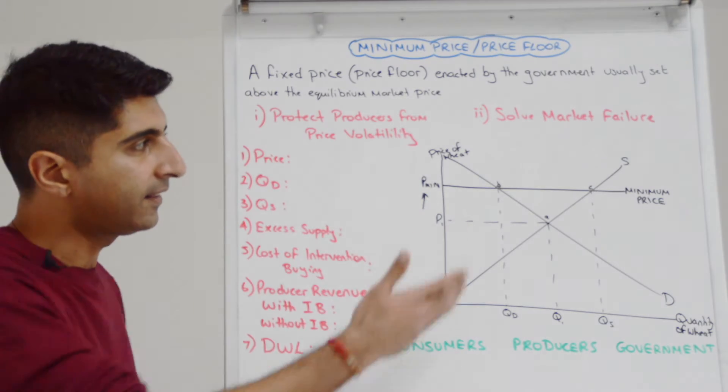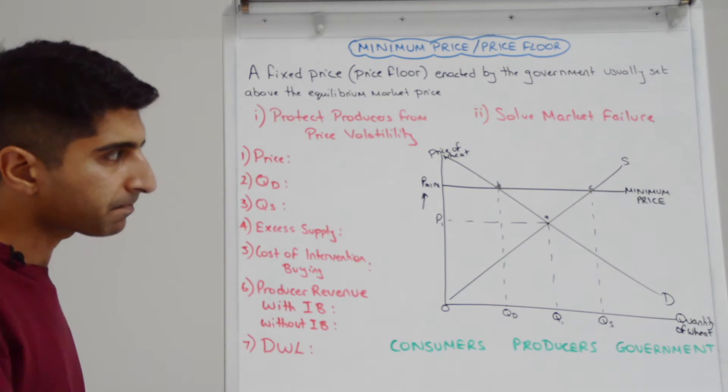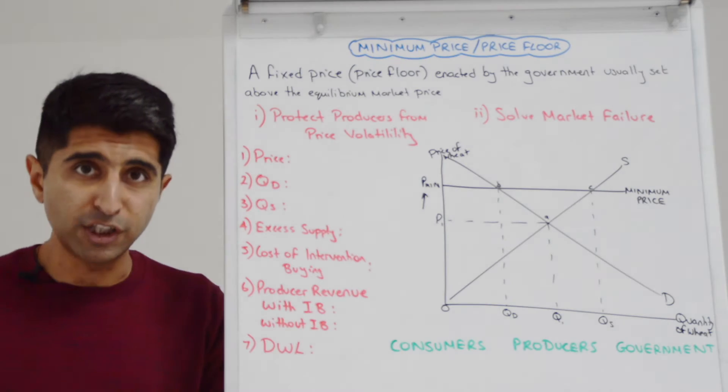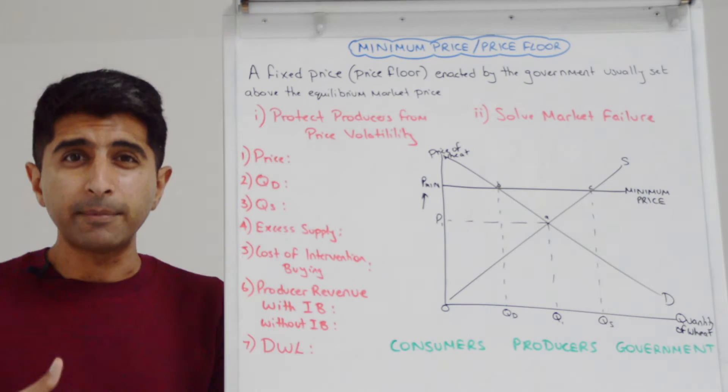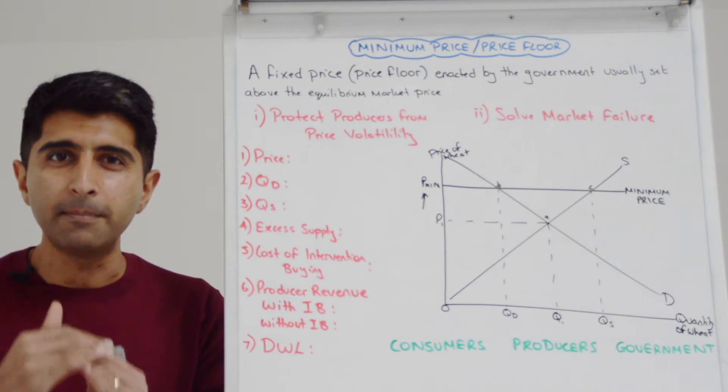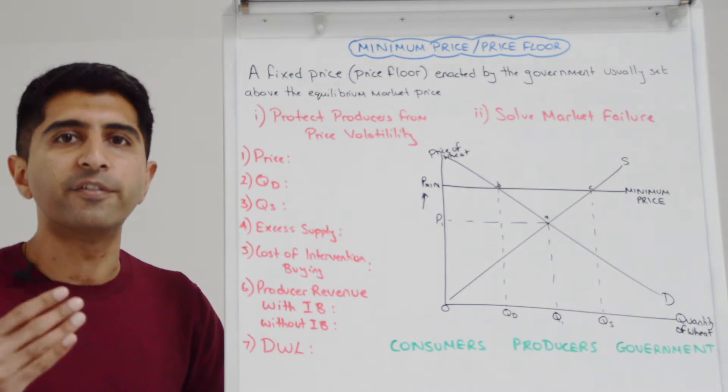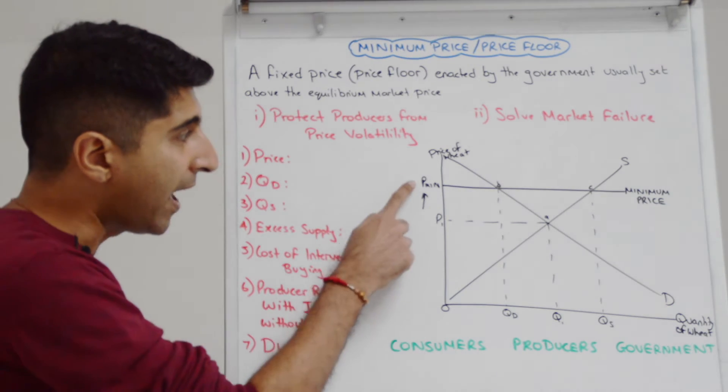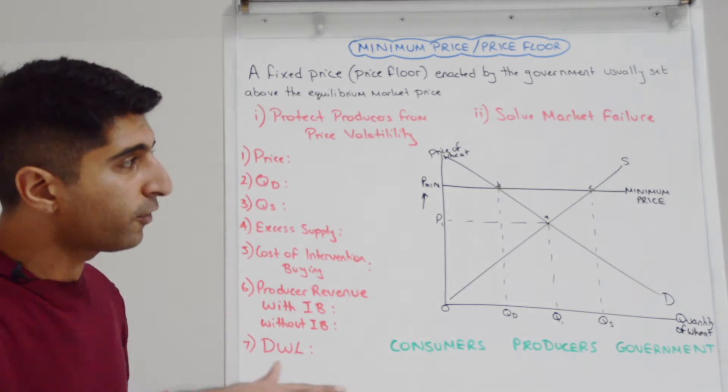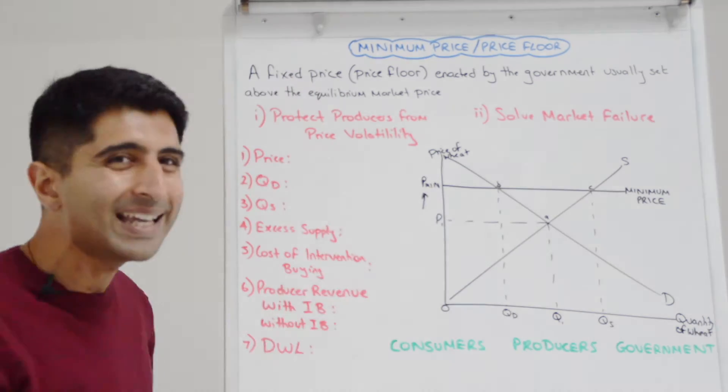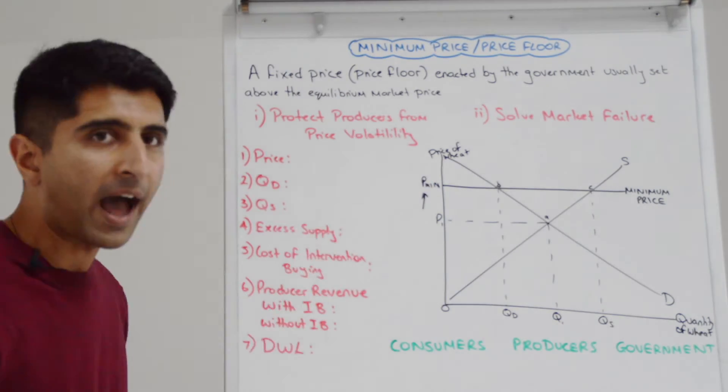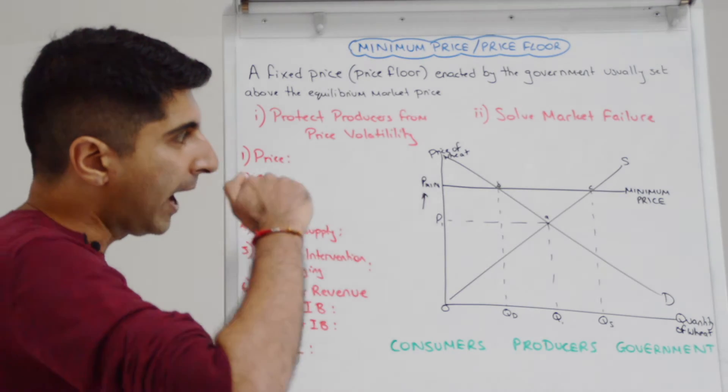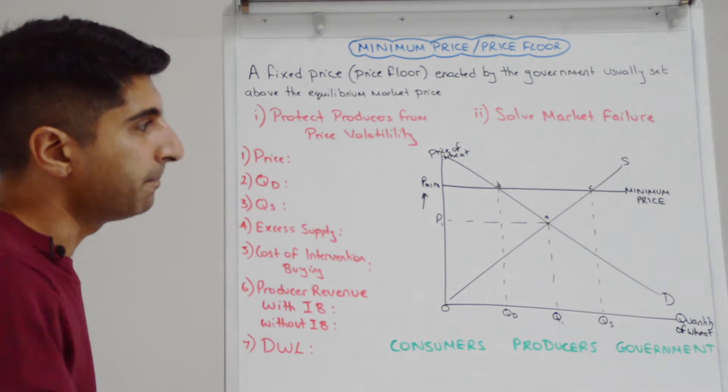So here we have the market for a commodity, let's say the market for wheat. And we are at P1, Q1 initially, that's equilibrium. But now the government comes in and says, no, we want to enact a minimum price, a price floor above the equilibrium market price. And there it is at Pmin. At that price, we can draw a line across because that is the price floor. Legally, prices cannot go below that. So the price, the minimum price dominates in the market.